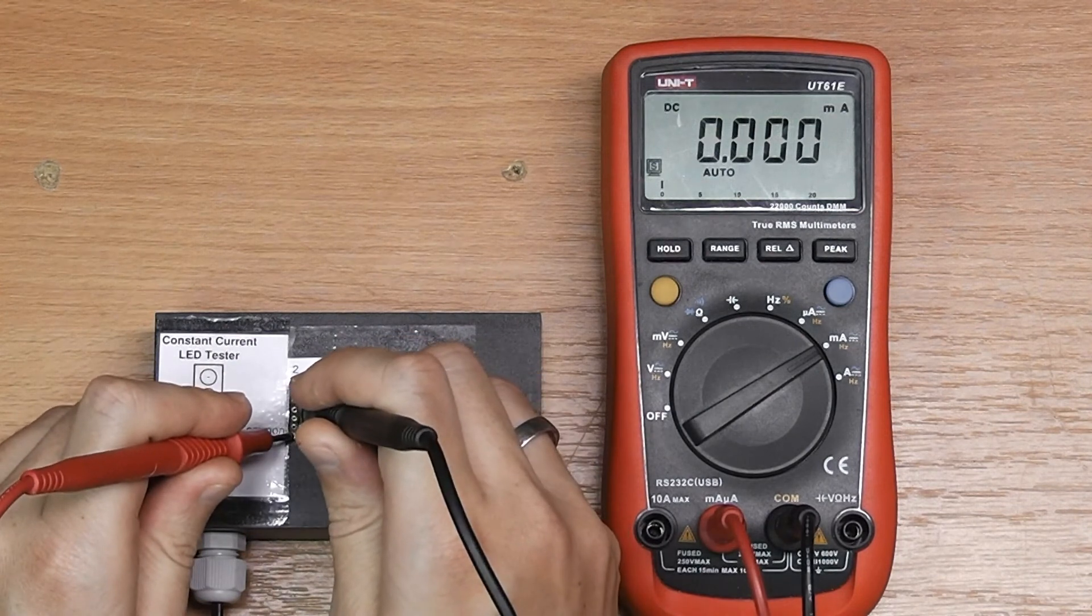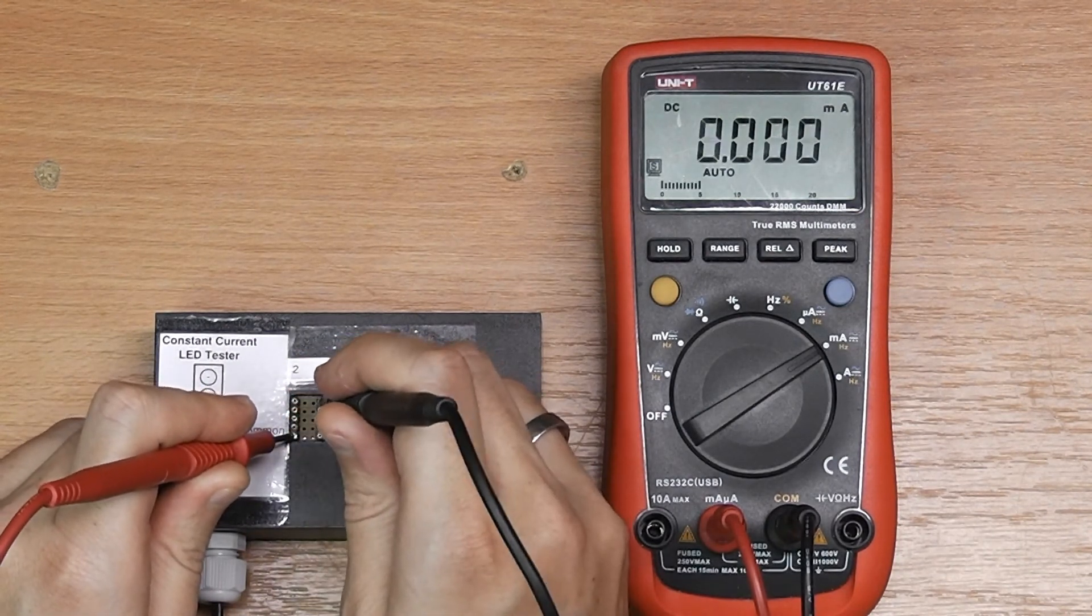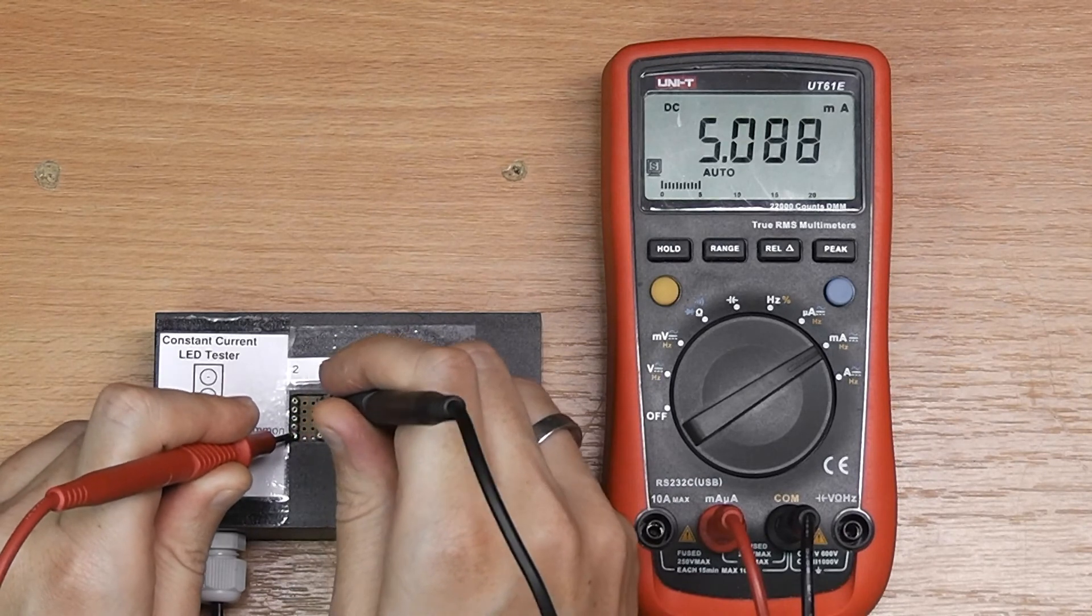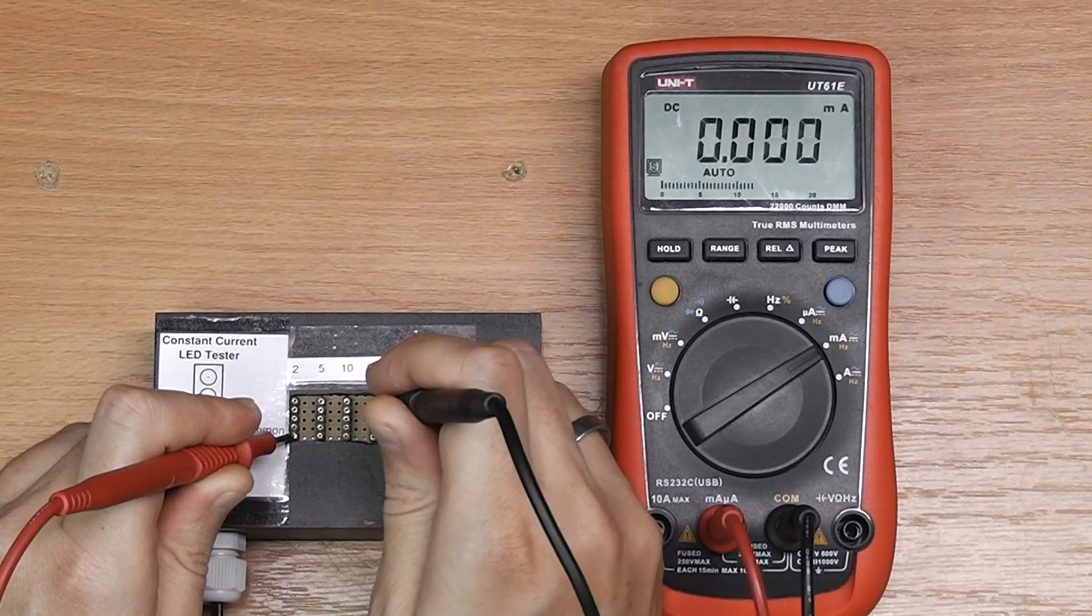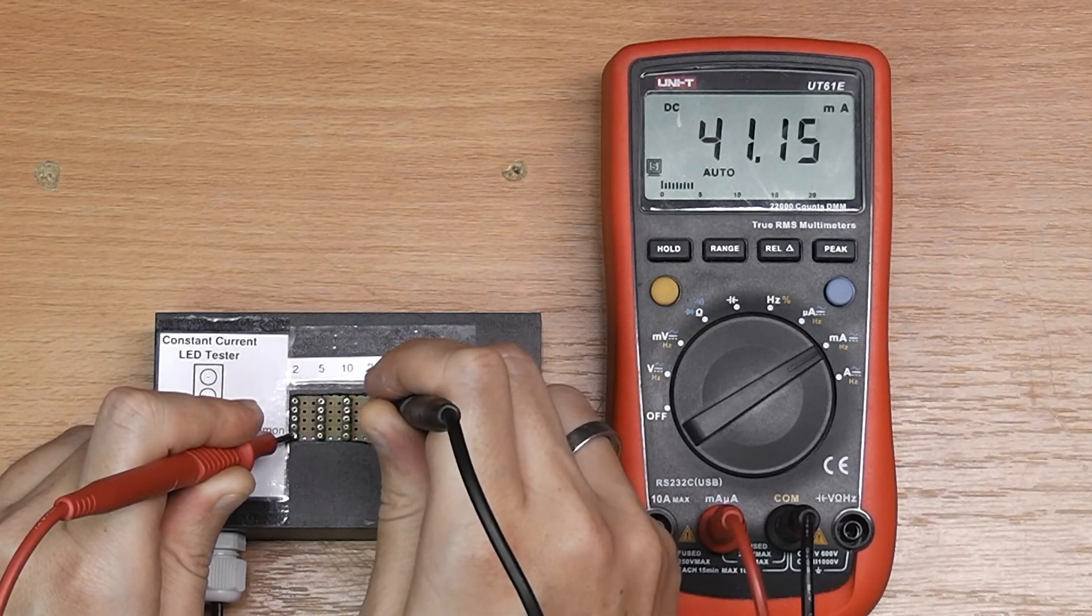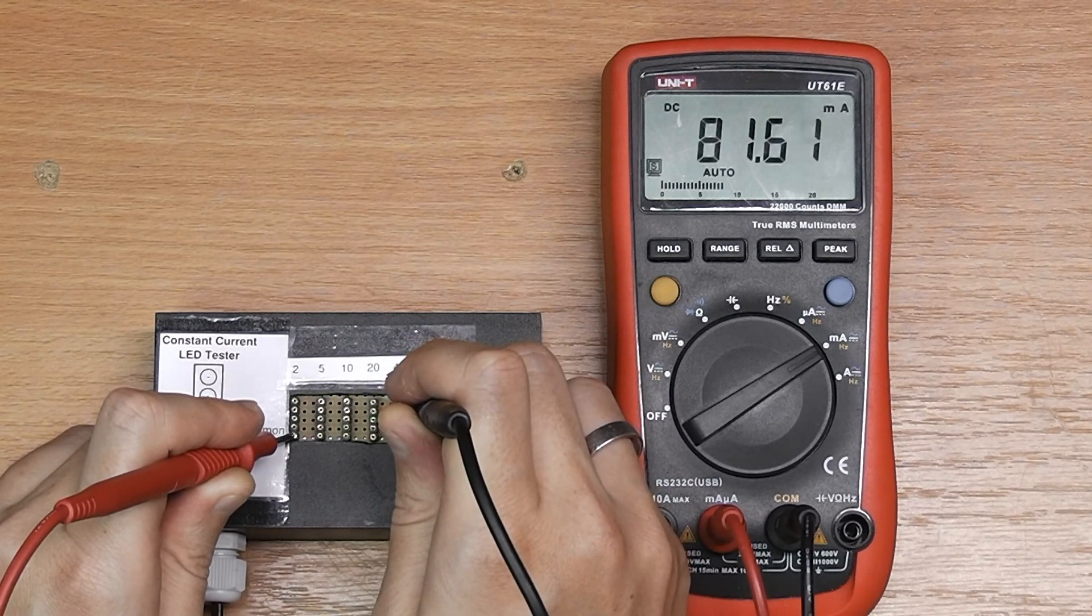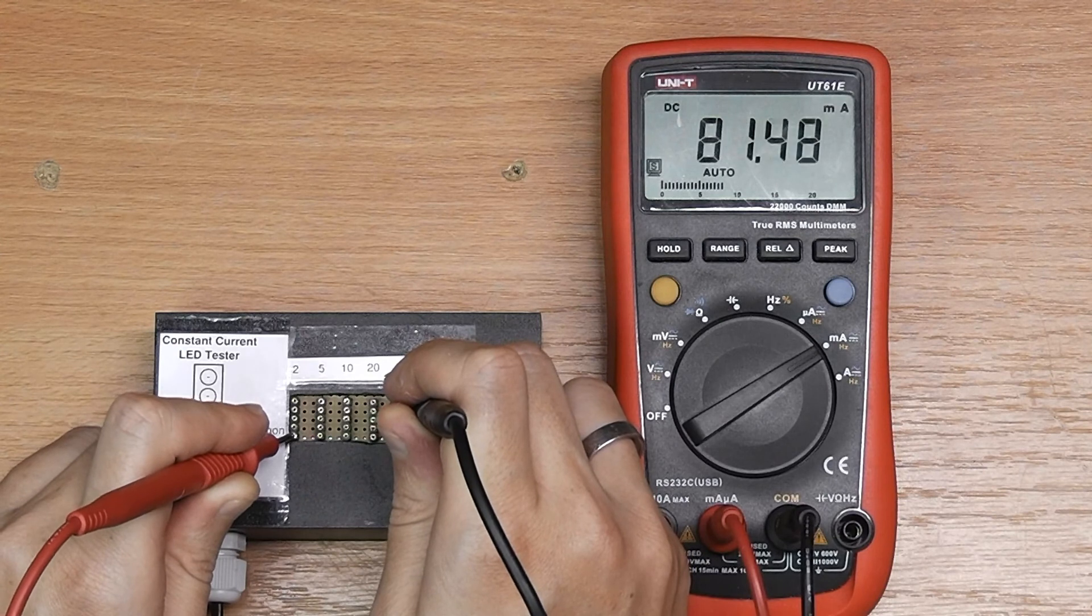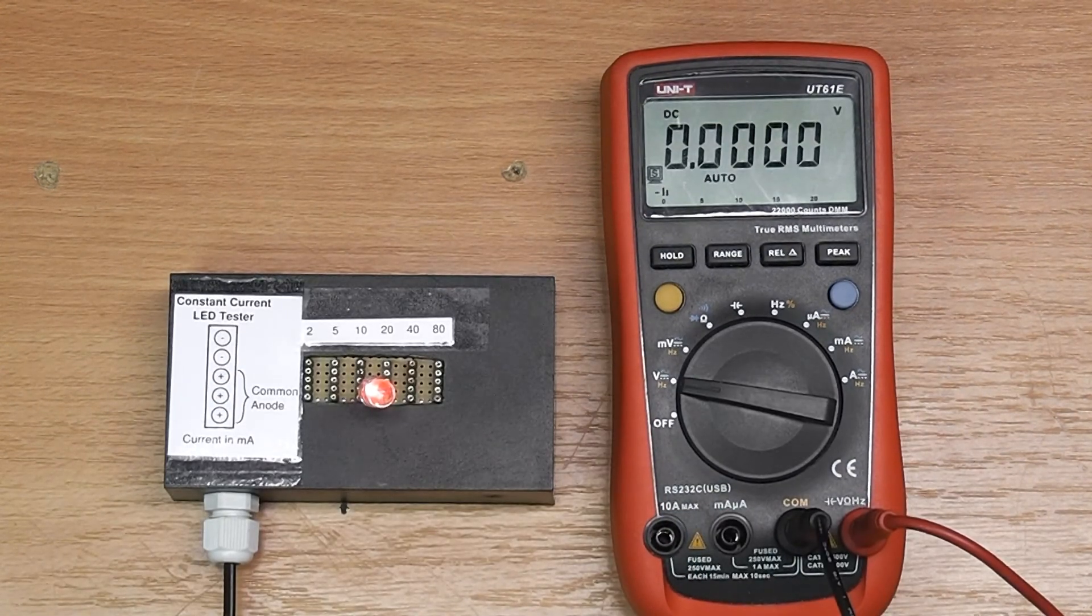And I will just measure each stage. This here is the 2mA stage. This here is the 5mA stage. 10mA stage. This here is the 20mA stage. The 40mA stage. And the 80mA stage. And you will see those values all are pretty much spot on.